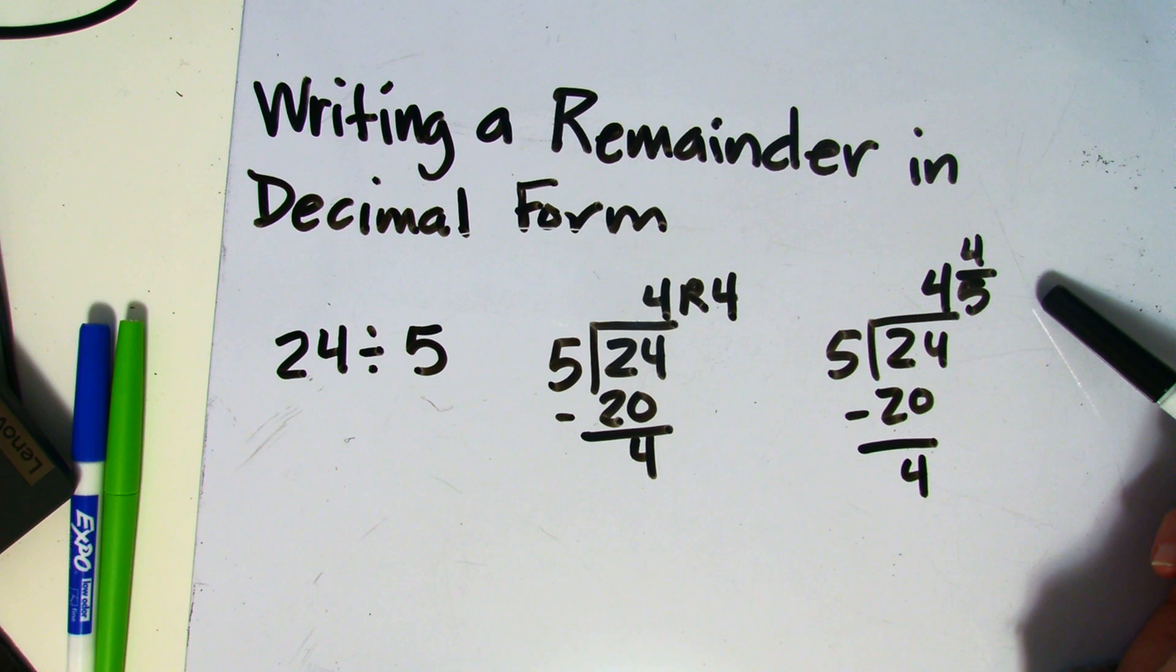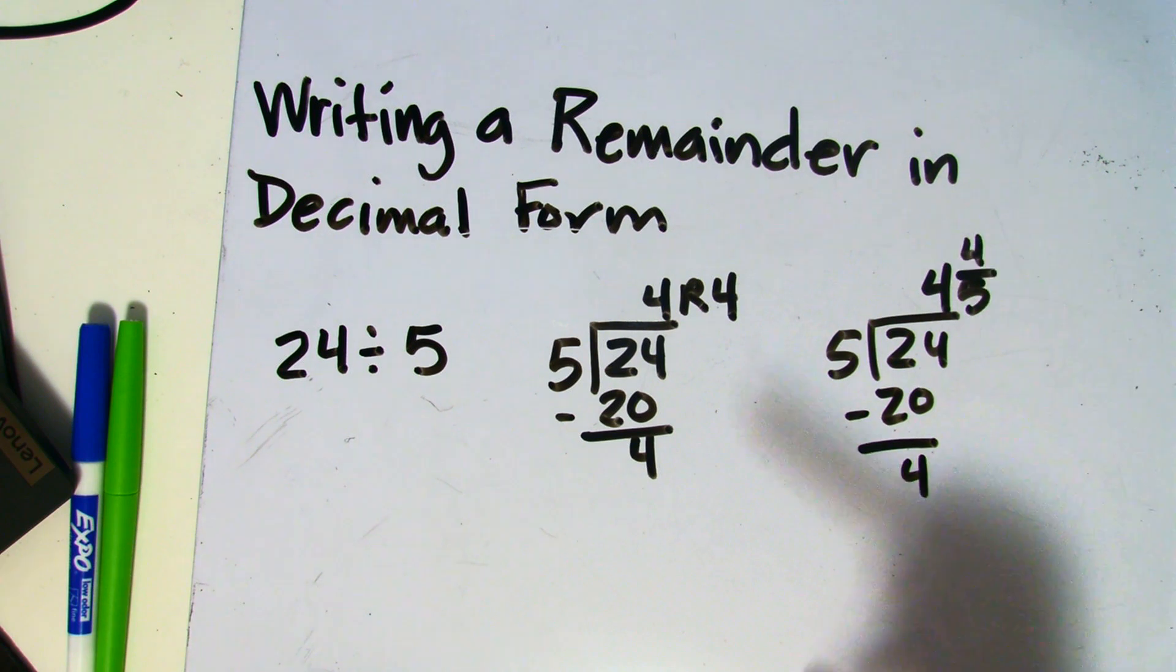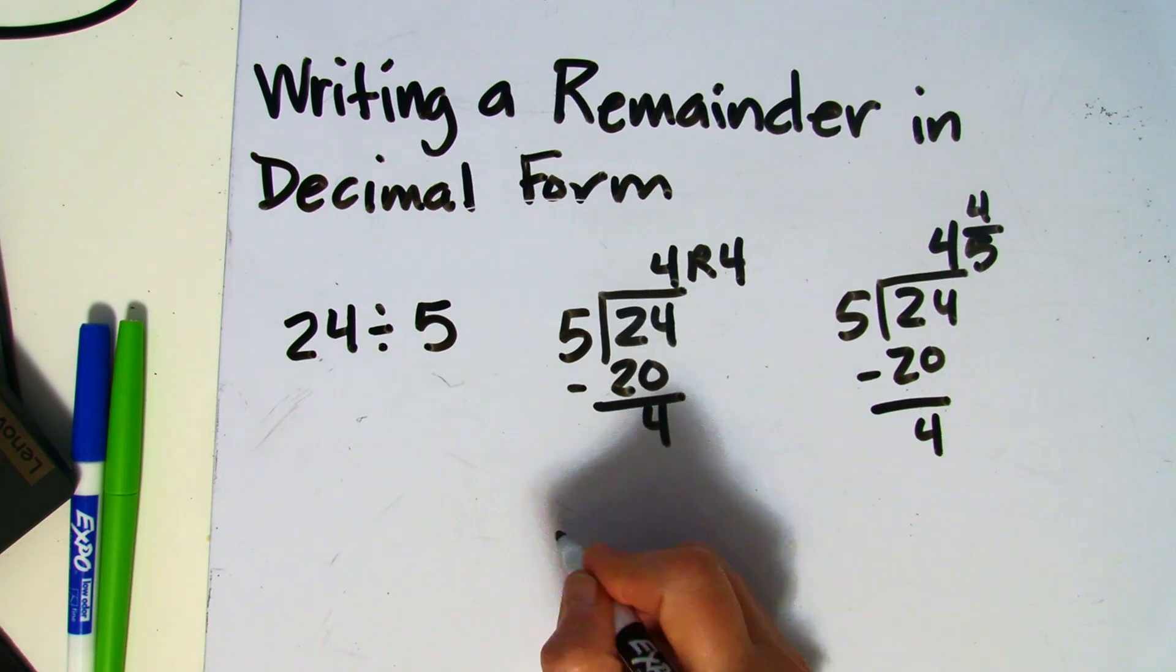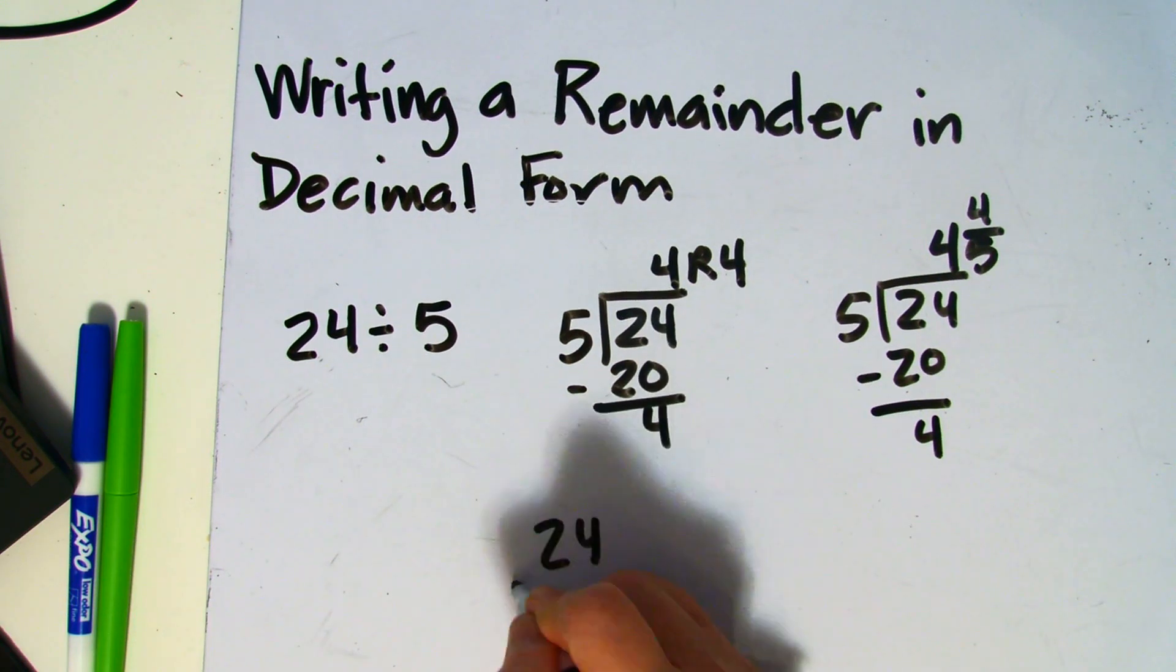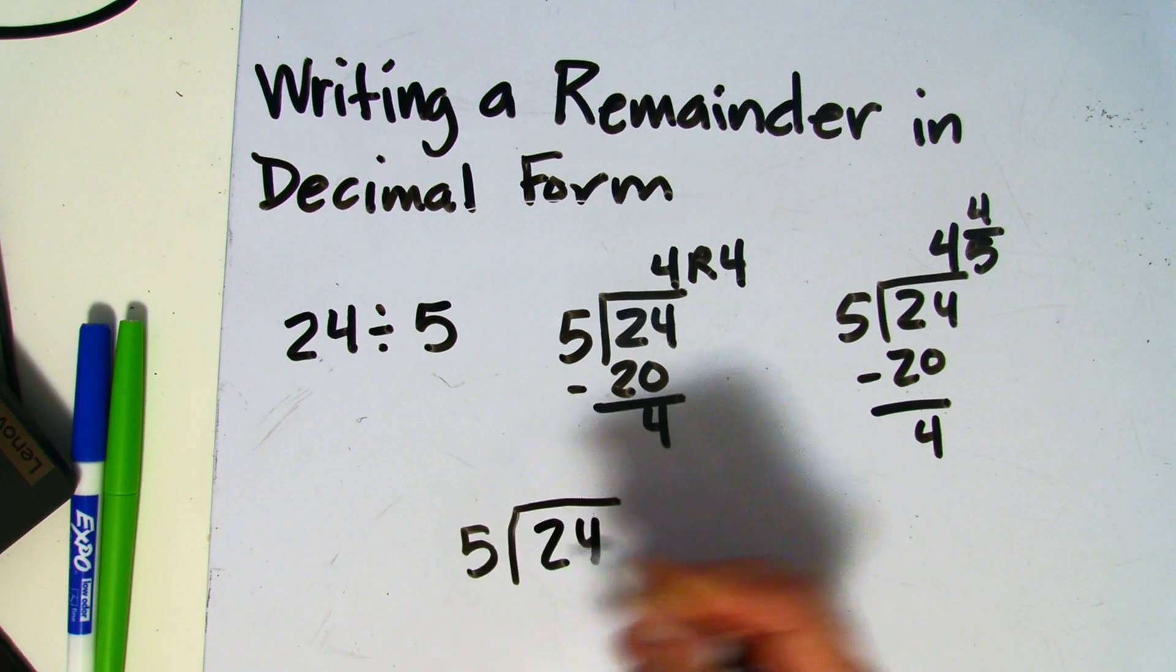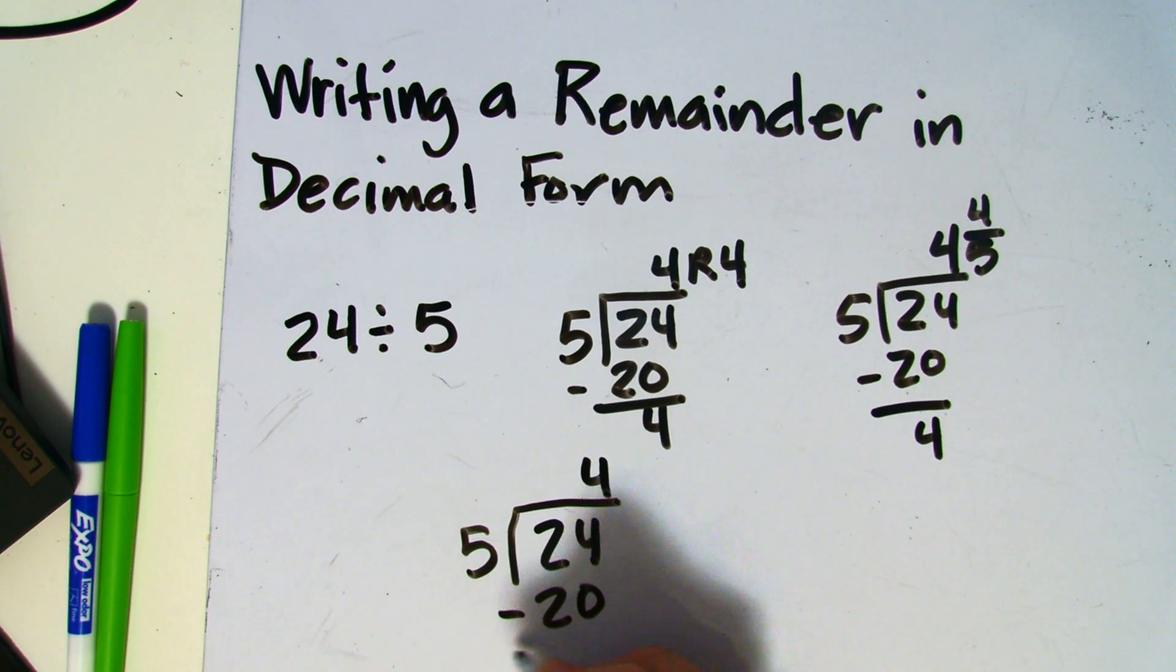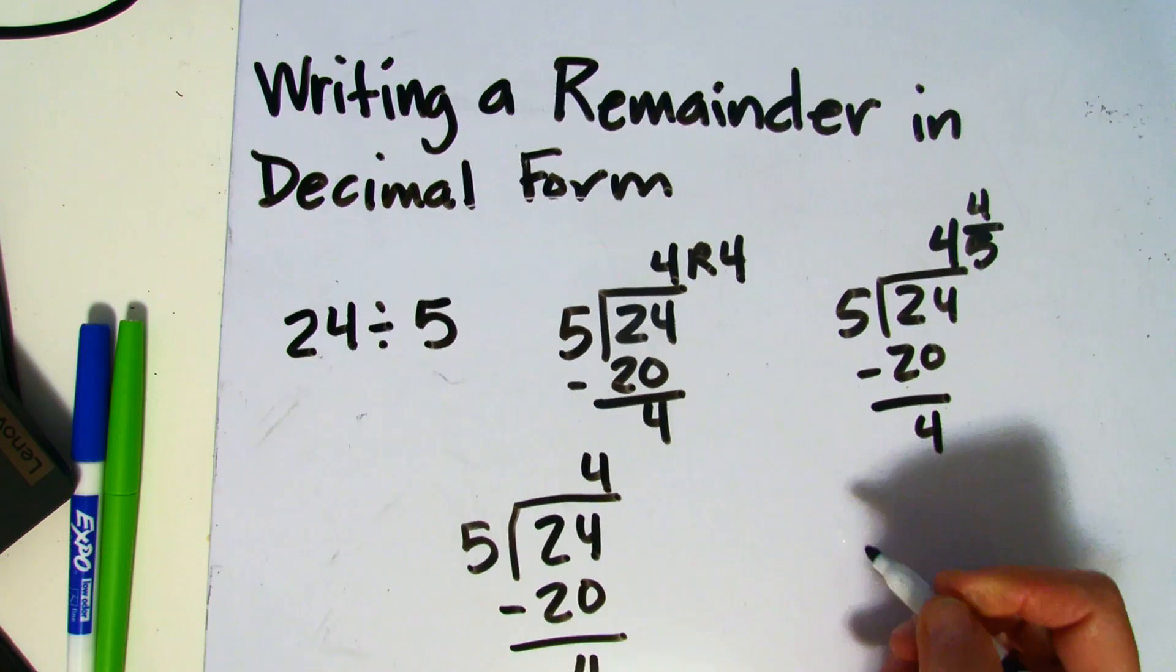Now let's write that remaining amount in decimal form. We'll write it similarly, 24 divided by 5. 5 times 4 is 20. And we get 4 left over.